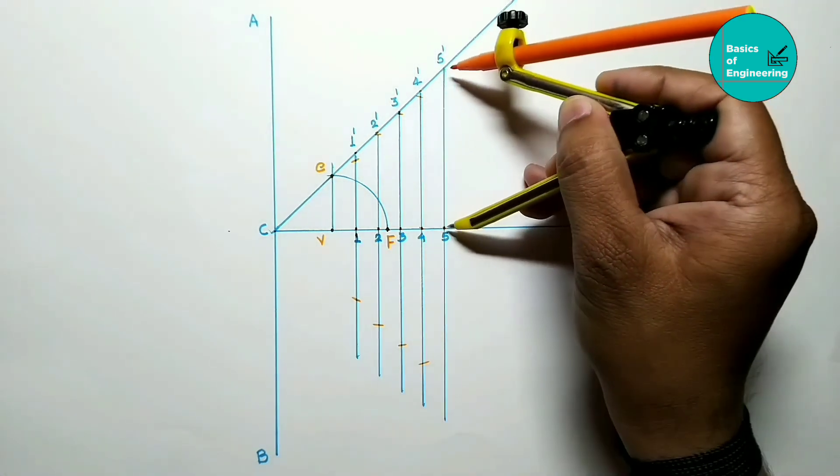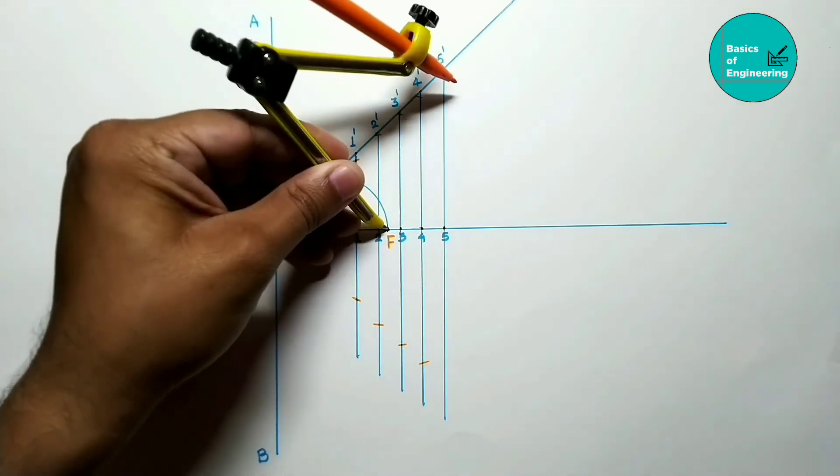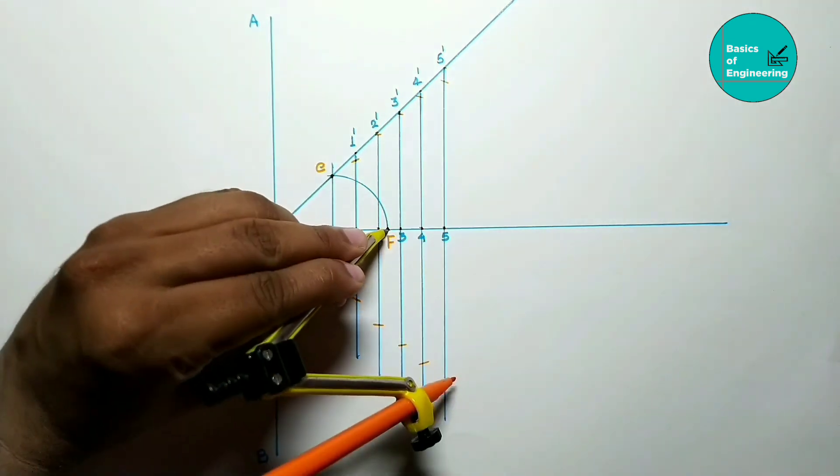5 to 5 dash, F as center, one arc on upside, one arc on downside.